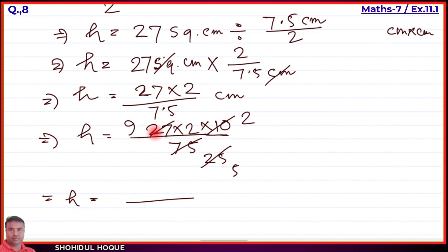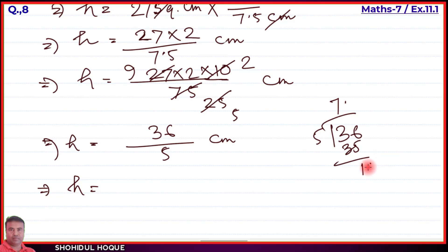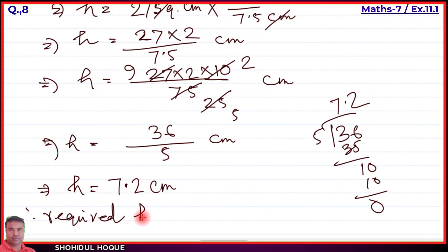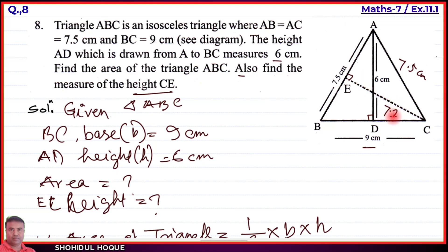Calculating: 9 into 2 equals 18, and continuing the division gives us 36 divided by 5 equals 7.2 centimeters. So CE height equals 7.2 centimeters. Therefore the required height CE equals 7.2 centimeters. This completes question number 7 and question number 8.